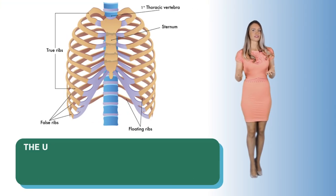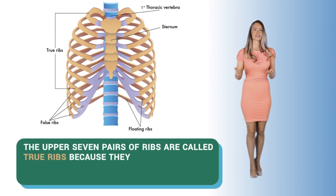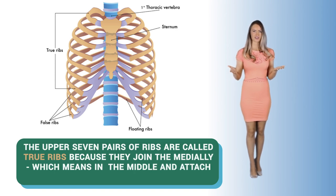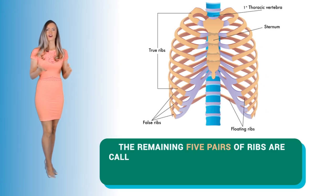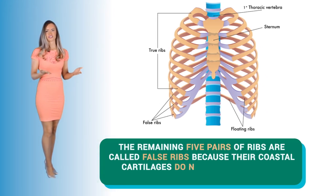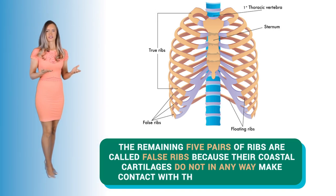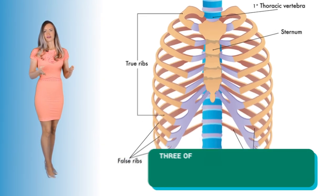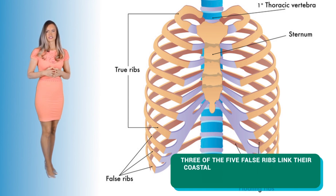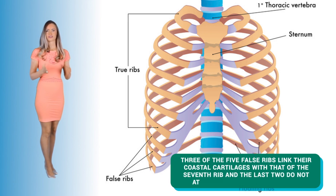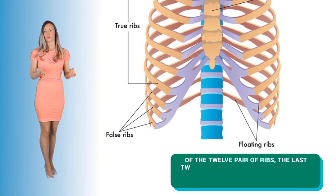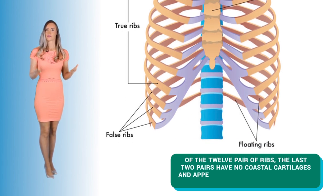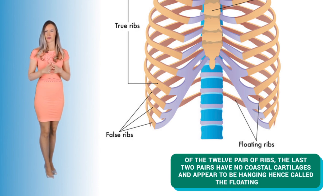The upper seven pairs of ribs are called the true ribs because they join medially, which means in the middle, and they attach directly to the sternum. The remaining five pairs of ribs are called the false ribs because their costal cartilages do not make contact with the sternum directly. Three of the five false ribs link their costal cartilages with that of the seventh rib, and the last two do not attach to the sternum at all — these are called the floating ribs.